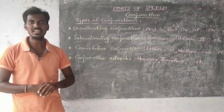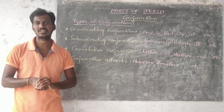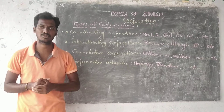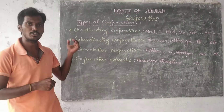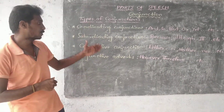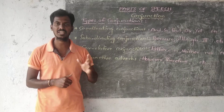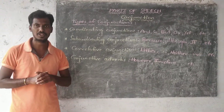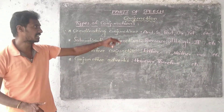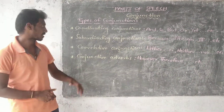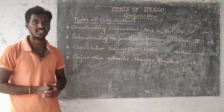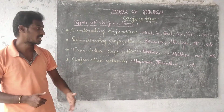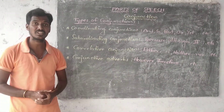There are various types of conjunctions in English grammar. In English grammar we have to mainly focus on four types of conjunctions. They are: coordinating conjunctions, subordinating conjunctions, correlative conjunctions, and conjunctive adverbs.